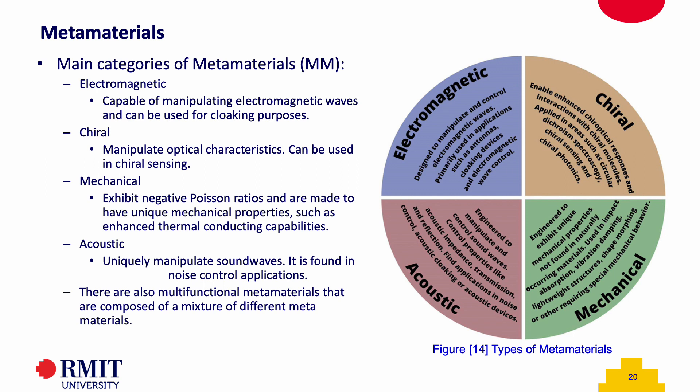Mechanical metamaterials can exhibit negative Poisson ratios and can be altered to have specific thermal conductive properties, making them useful in applications such as shock absorption and as a heating element. Acoustic metamaterials can manipulate sound waves to exhibit zero or negative refractive indices for sound, allowing for precise control of sound at sub-wavelength scales. Multifunctional metamaterials are composed of a mixture of different metamaterials, creating materials that can serve a multi-purpose function. As such, metamaterials in the topic of large commercial aircrafts have the potential to impact all three main spheres of sustainability: environmental, economical, and social.